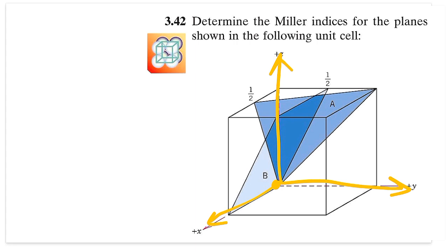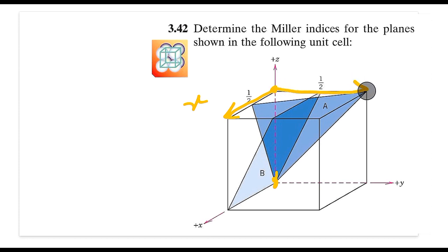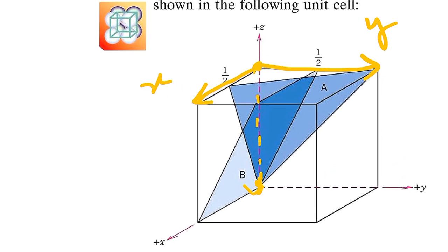The plane is passing through this predefined origin, which is problematic — we have to shift the origin. We need to find the most suitable origin that allows us to calculate all the intercepts just by looking at the figure. If I choose the point vertically above, then the forward direction becomes the positive x-axis, the right direction becomes the positive y-axis, and vertically downward becomes the negative z-axis.